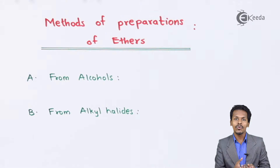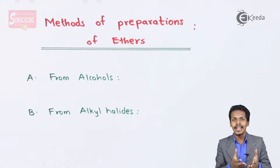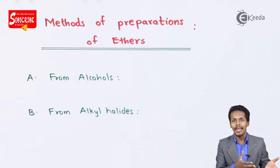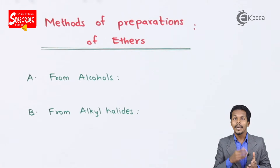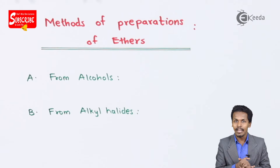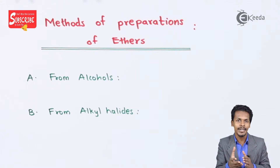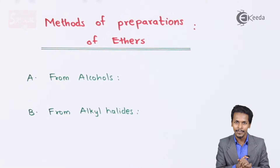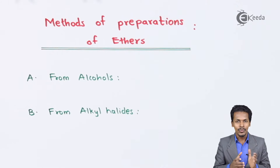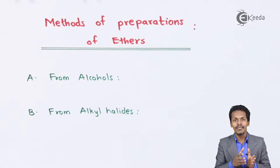If the alcohol undergoes a dehydration process, we understand that we can form an alkyl. But if we provide a proper condition to the alcohol during the dehydration process, then that alcohol can be converted to ether. So this is one of the methods where we can convert an alcohol into ether.